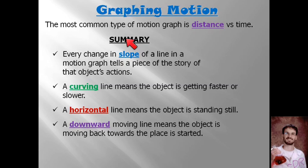In summary, every change in slope of a line on a motion graph tells you a piece of a story about an object's actions. Every time you change slope, you are changing speed. A curving line means that the object is getting faster or slower, and that's acceleration. A horizontal line means most likely that the object is standing still. A downward moving line means the object is moving towards the reference point. An upward moving line means an object is moving away from a reference point.